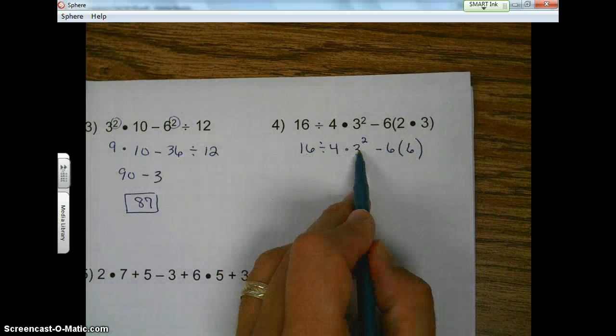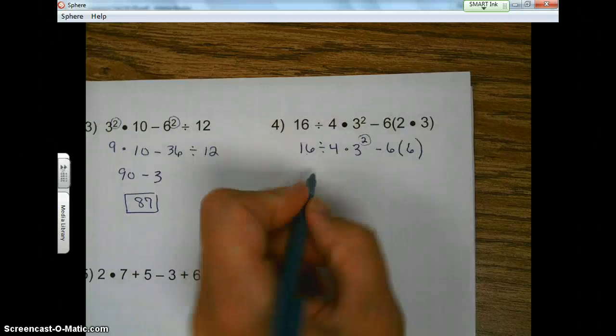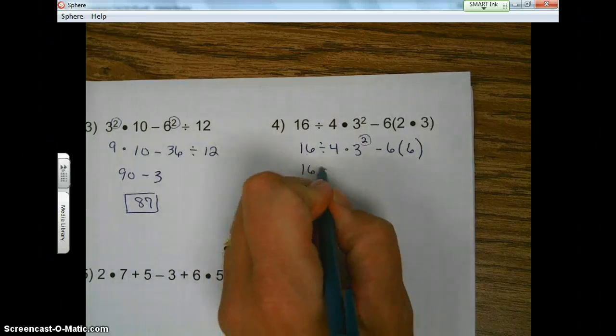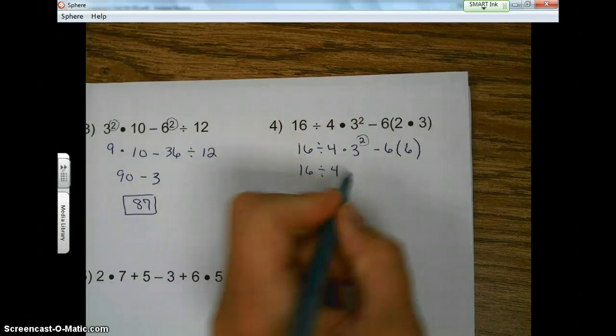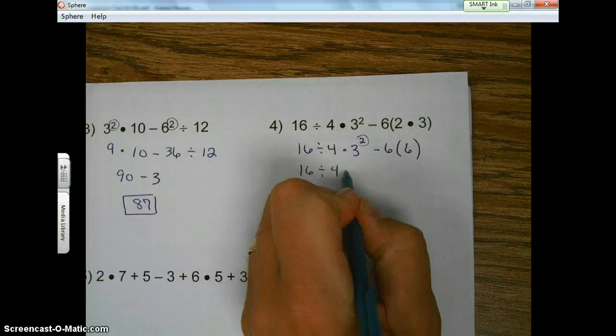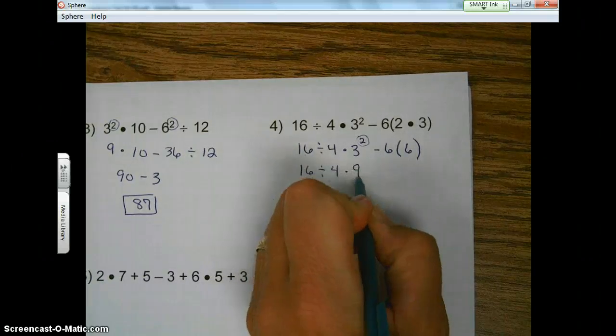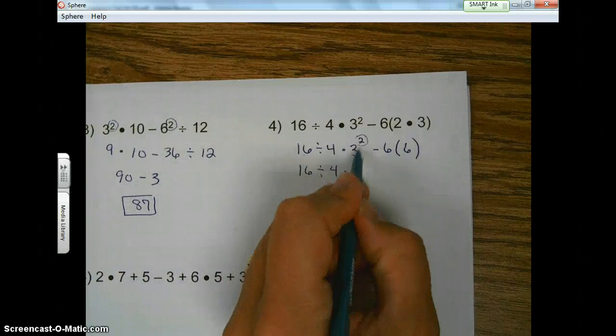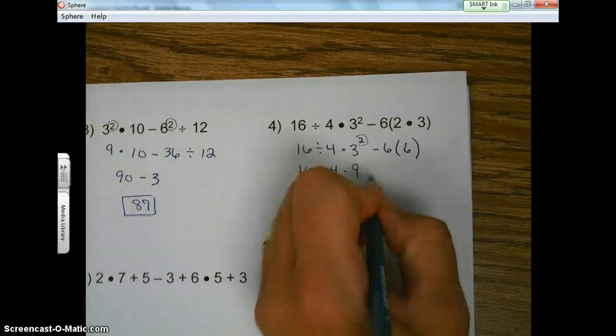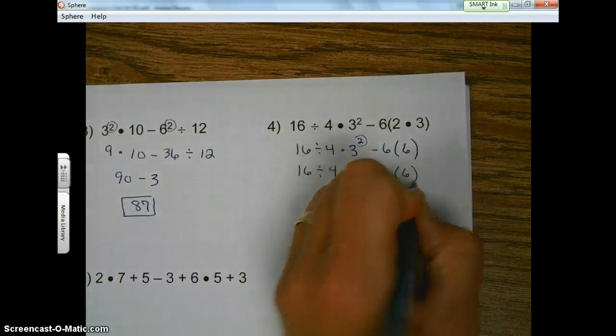Okay. Exponents. Here we go. Here's our exponent. So we bring 16 down, bring the 4 down, and we're multiplying. We're going to multiply 3 times 3. 2 threes, because the exponent, the power is 2. Bring everything straight down.